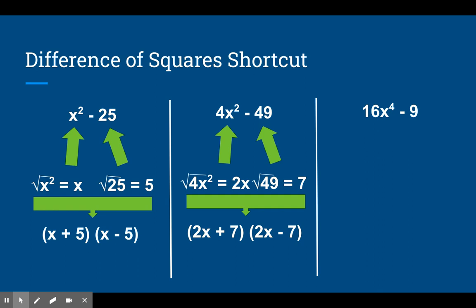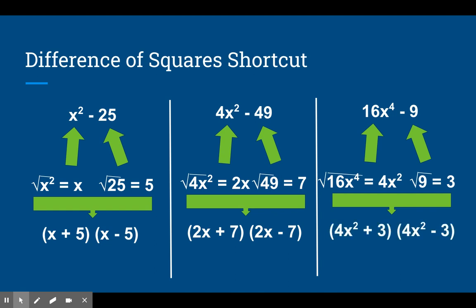For 16x to the fourth minus 9, the square root of 16x to the fourth is 4x squared, and the square root of 9 is 3. So we have 4x squared plus 3 times 4x squared minus 3.